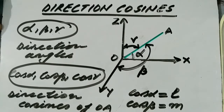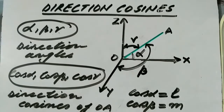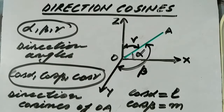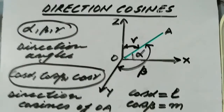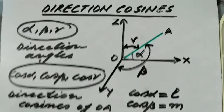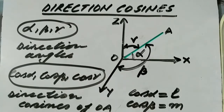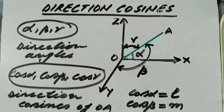As in two-dimensional coordinate geometry we use two mutually perpendicular straight lines as reference lines to locate a point, here in three-dimensional coordinate geometry we use three mutually perpendicular straight lines as reference lines known as x-axis, y-axis and z-axis.